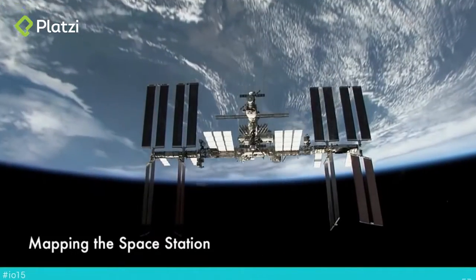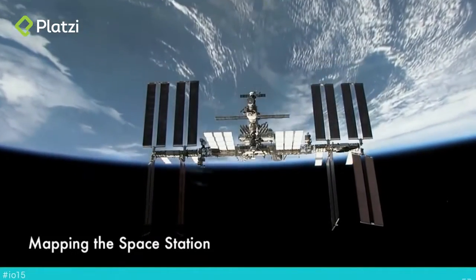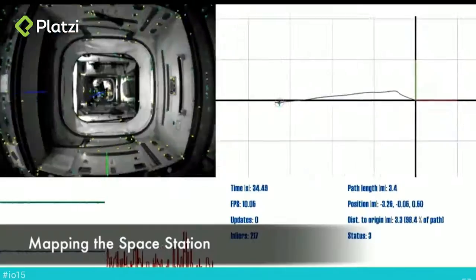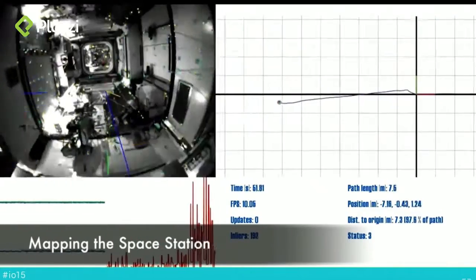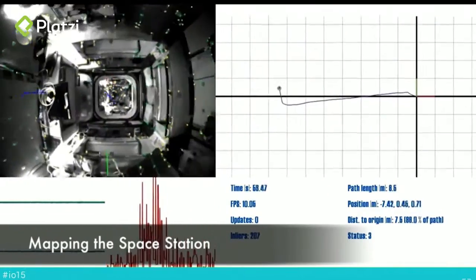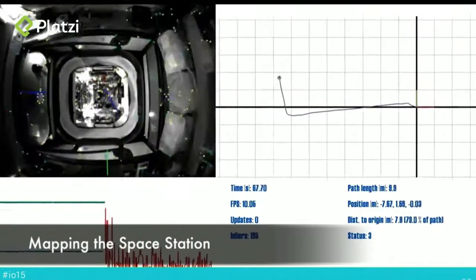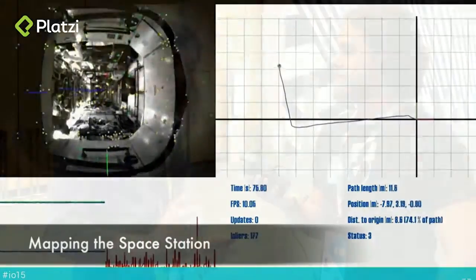What we did with NASA — this was earlier — they took an earlier version of the Project Tango device and they mounted it on these robots that they float around and navigate within the International Space Station.